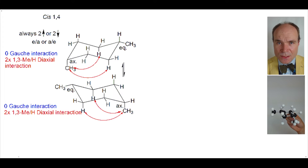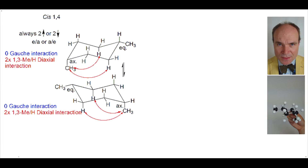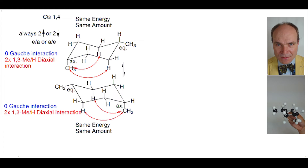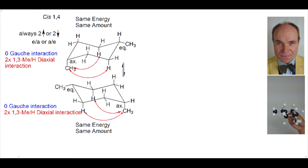The two chair conformations of cis-1,4-disubstitution patterns have the same energy. Therefore, they have the same abundance.